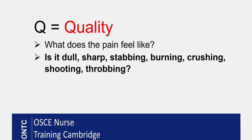Then we move on to Q, which is the Quality of the pain. Here we find out from our patient what the pain feels like. We ask the patient: does it feel like dull pain, sharp pain, stabbing, burning, shooting, crushing, or throbbing? That can tell you a lot about the pain.